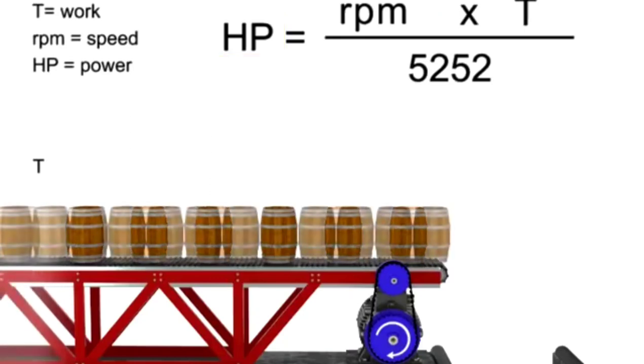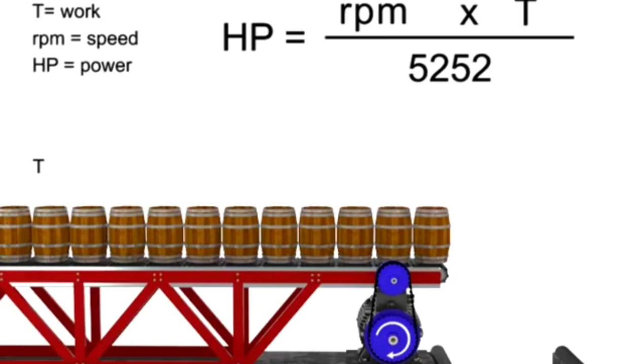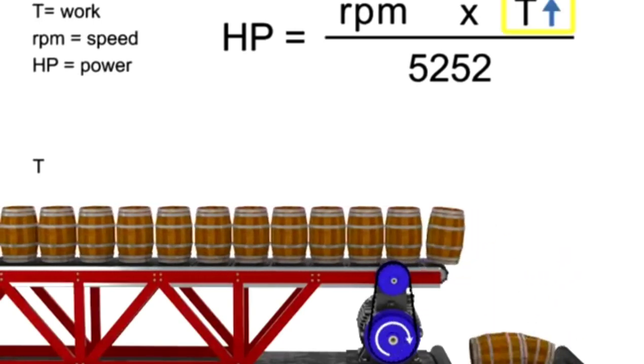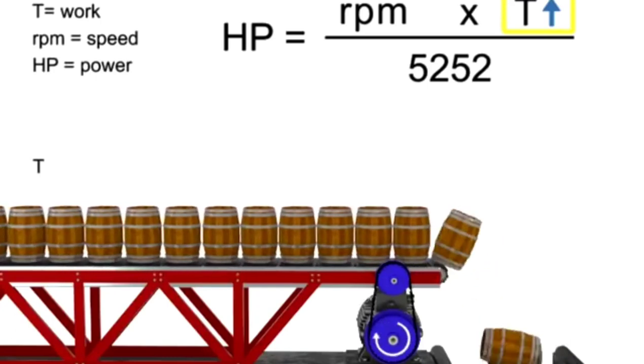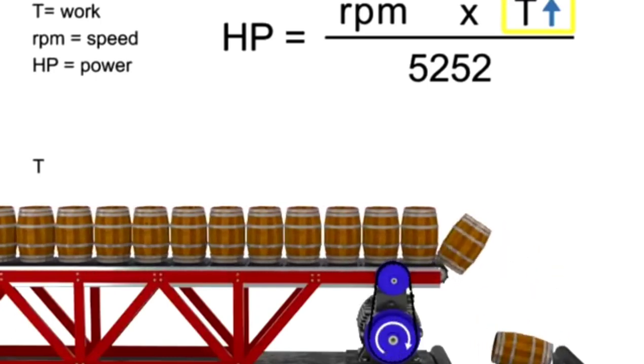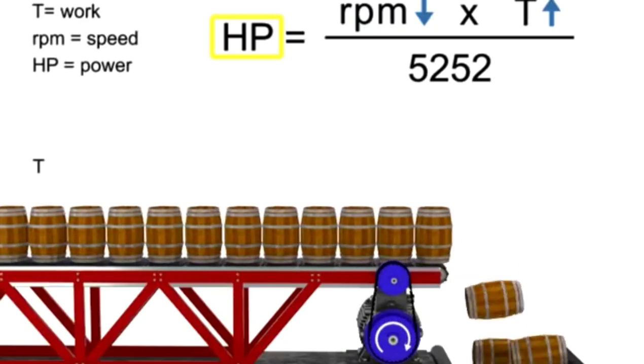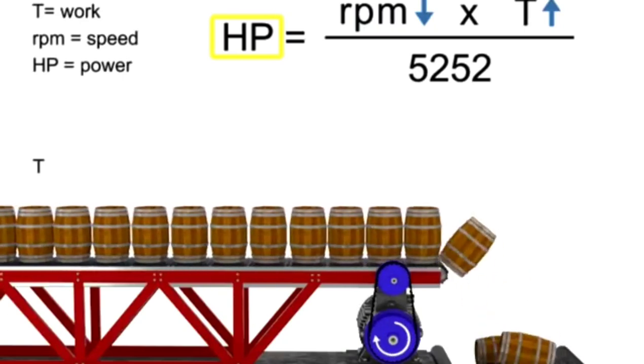Let's say we want the horsepower of our motor to remain constant but wish to increase the torque. If torque increases, the speed of the conveyor decreases so that the horsepower required of the motor remains constant.